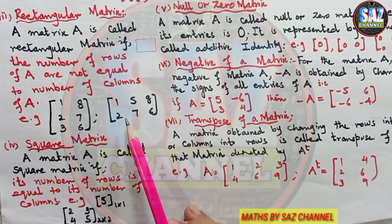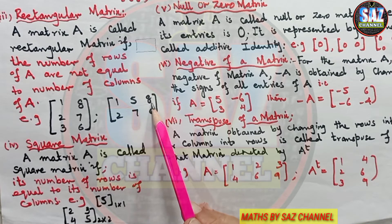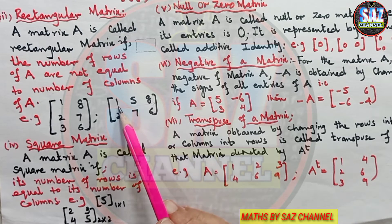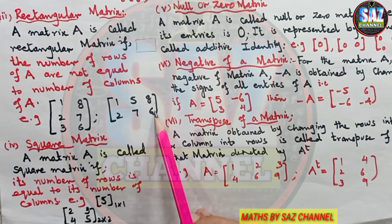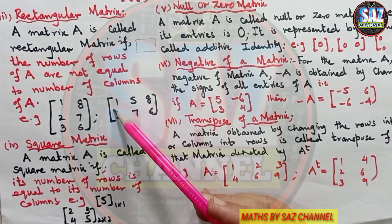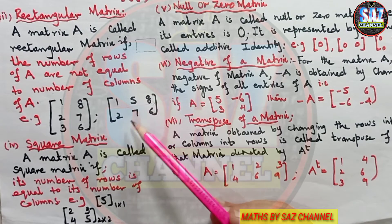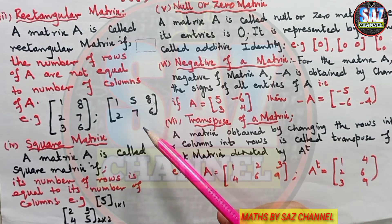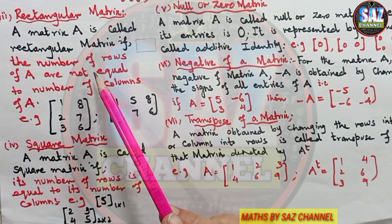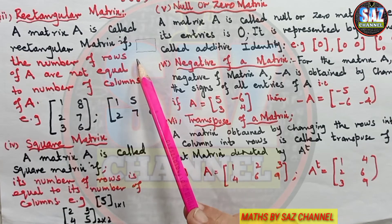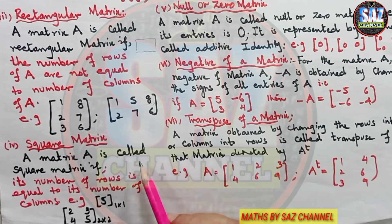In another example, this matrix has two rows — the first row has elements 1, 5, and 8, and the second has elements 2, 7, and 6 — and it has three columns. So the rectangular matrix is a matrix in which the number of rows and number of columns are not equal.